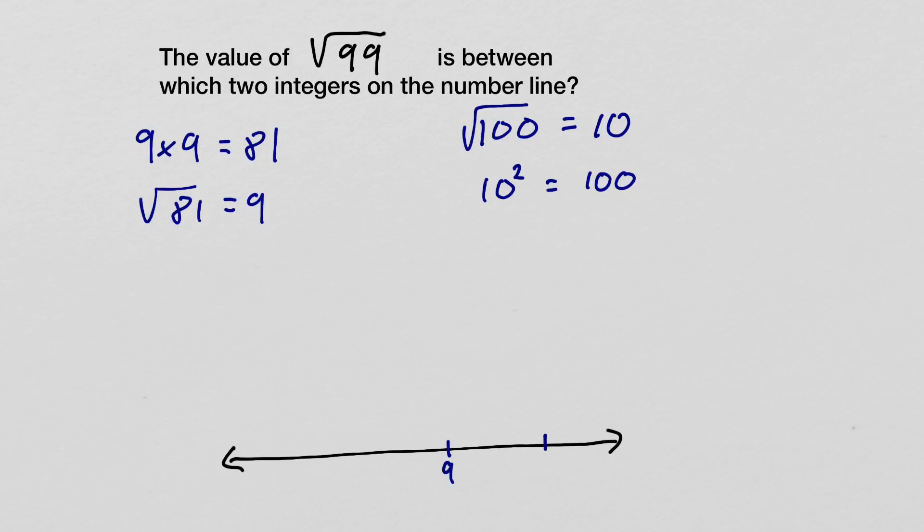Well, that means that 9 and 10 on the number line correspond to the square root of 81 and the square root of 100.